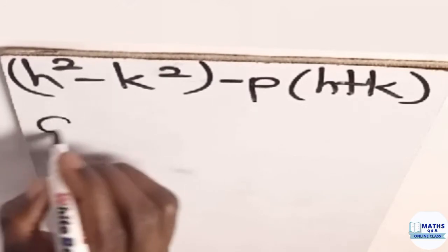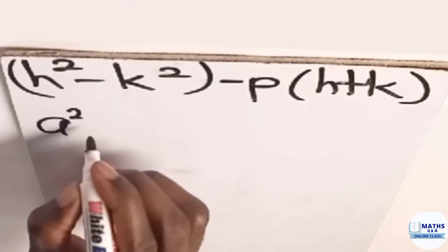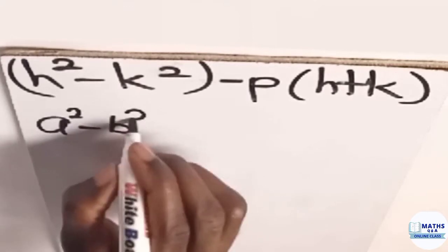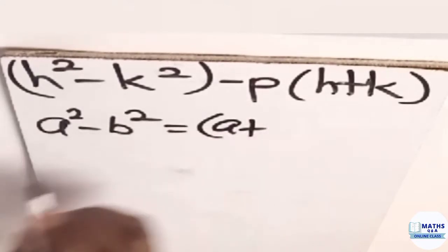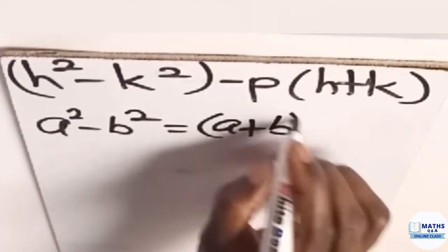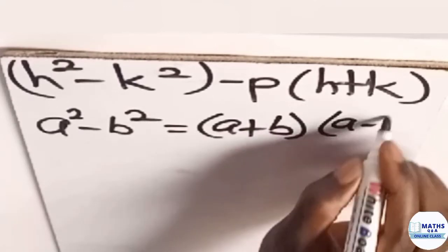And this is what it says. It says that whenever you have two perfect squares, for instance, a square minus b square, you can factorize that as a plus b and then a minus b.